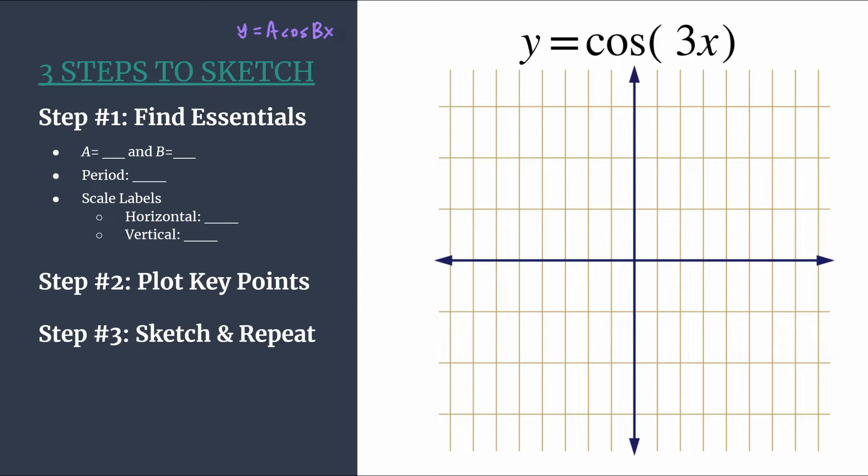It's very easy to see where a and b are in this equation. A is an understood one in front of cosine that tells us our amplitude is one, distance from midline to either max or min. And then we see b is 3, so we should know there will be three cycles between 0 and 2π if we were to graph all the way to 2π.